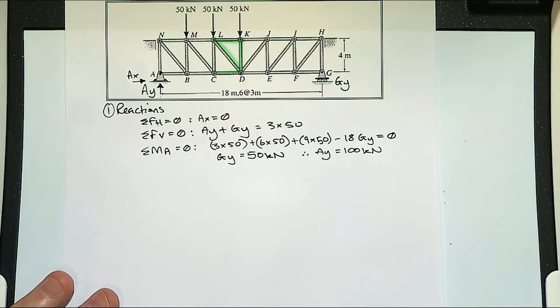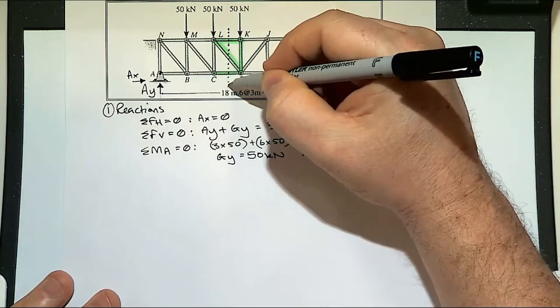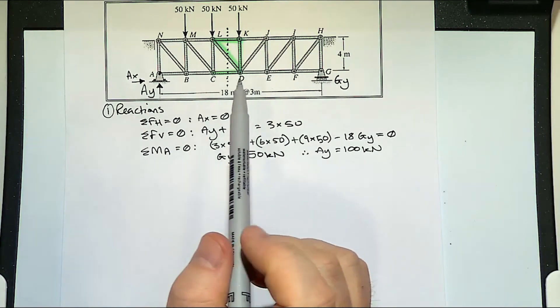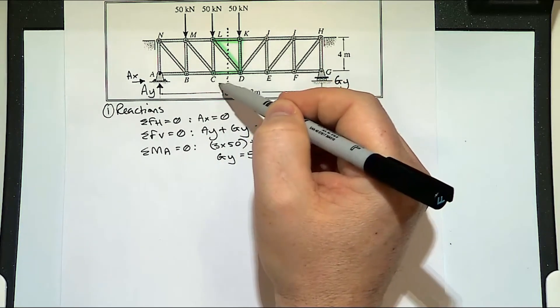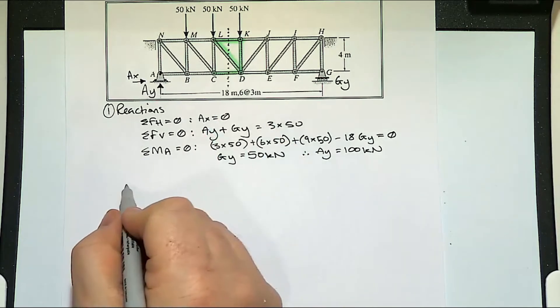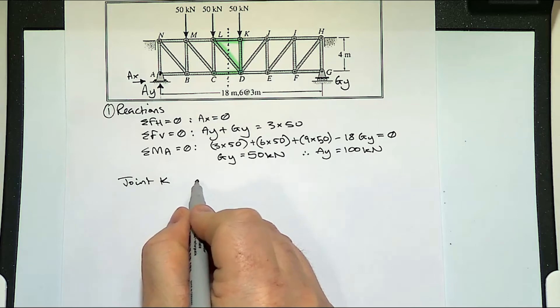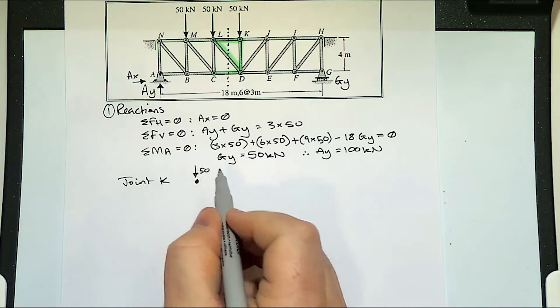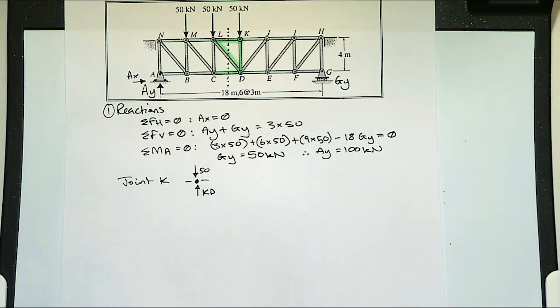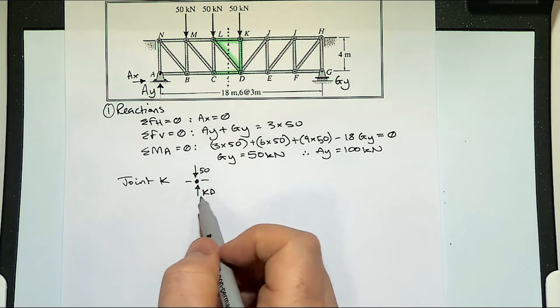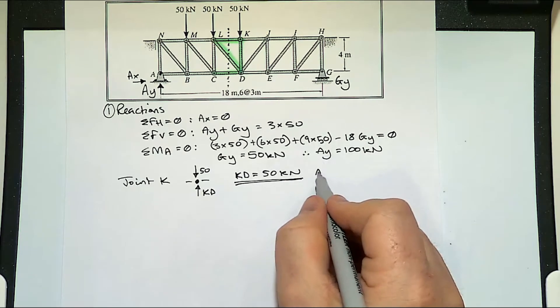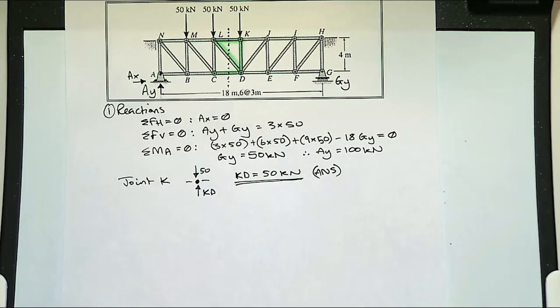What we'll do now, we'll create a section through this point here, so we'll slice through this point so that we can find out what LK, LD and CD is. If we looked at joint K, we've got the node. We've got a 50 coming down. We've got KD going upwards, and then we've got two horizontal members. If you just resolve that as a joint, your KD equals 50. So that's one of your answers. So we don't have to slice through KD.